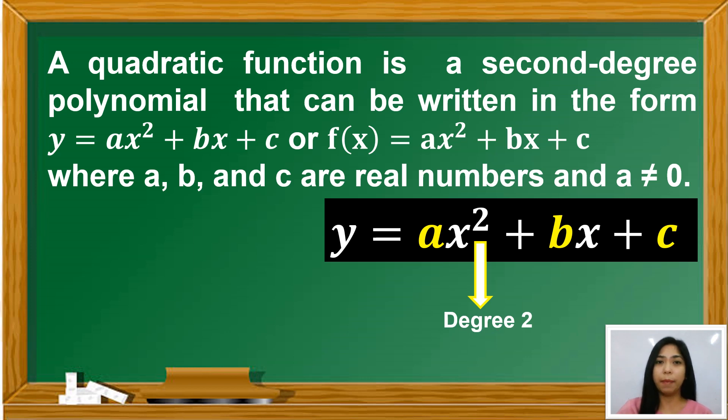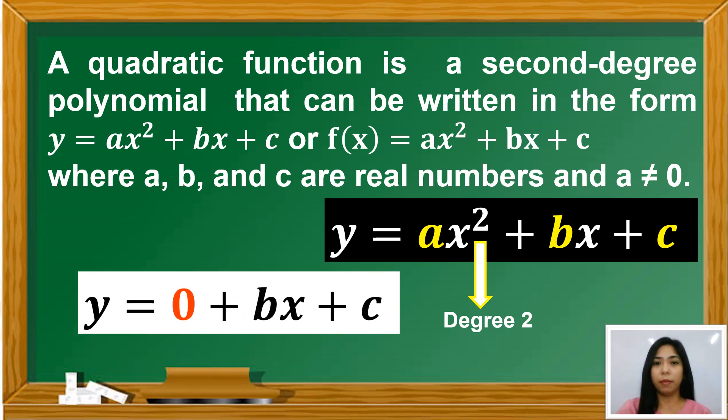Where A, B, and C are real numbers and A must not be equal to 0. Why is that A must not be equal to 0? Once A becomes 0, the quadratic term AX squared will be equal to 0. So the remaining terms will be BX plus C. And Y equals BX plus C is not a quadratic function. It is now a linear function. So remember, A must not be equal to 0.